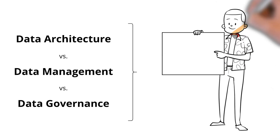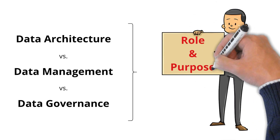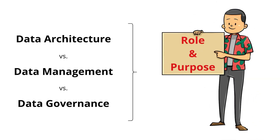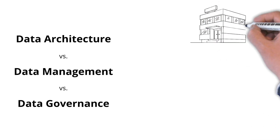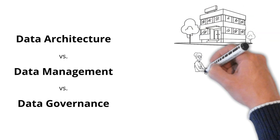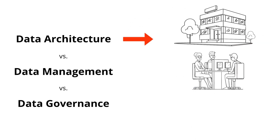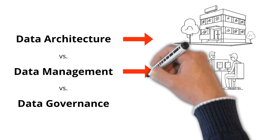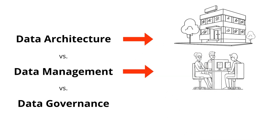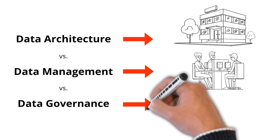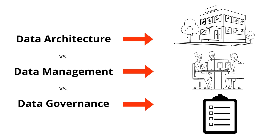First, it helps to understand the role and purpose of architecture versus management versus governance. Imagine a large office building with many people working within it. Data architecture would describe the building itself and the structure of the building, such as building plans. Data management would describe the management of the people working within the building. And data governance would describe the rules for changing the building plans or how people are managed.